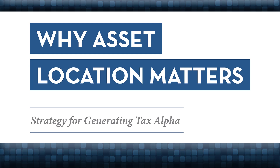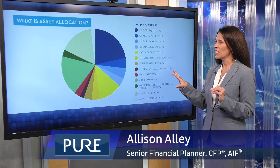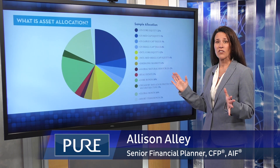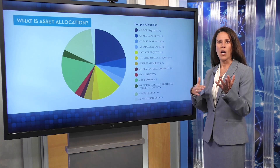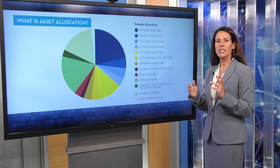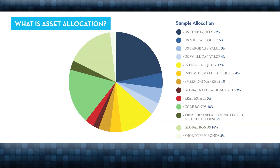We're going to go over the strategy of asset location. Most people have certainly heard of asset allocation, which is making sure that you have a very broadly diversified portfolio — an appropriate mix for your situation of stocks, bonds, cash, etc. Within stocks there are multiple subsectors: U.S. stocks, international stocks, and within bonds there are different types as well. Understanding your specific situation, your risk tolerance, your goals and objectives is going to help you come up with the appropriate asset allocation.